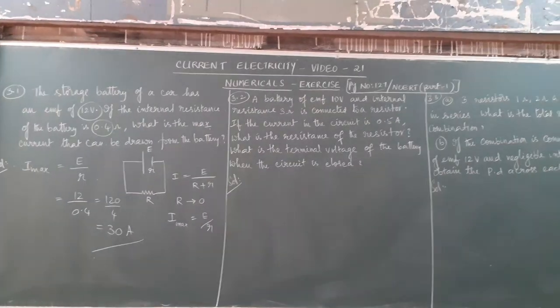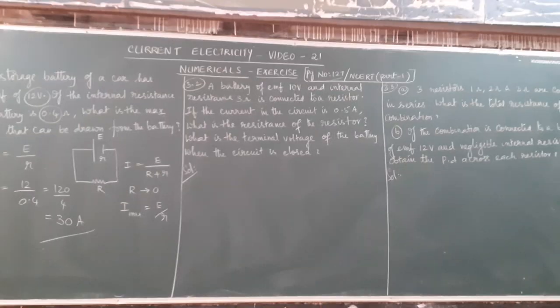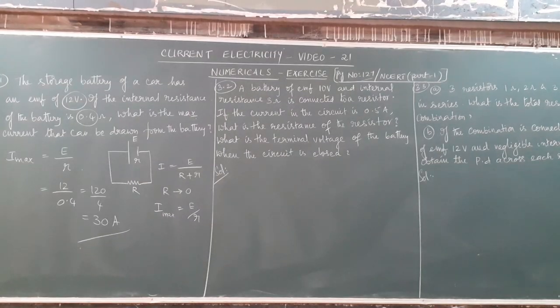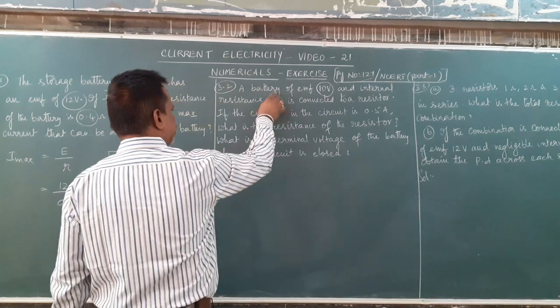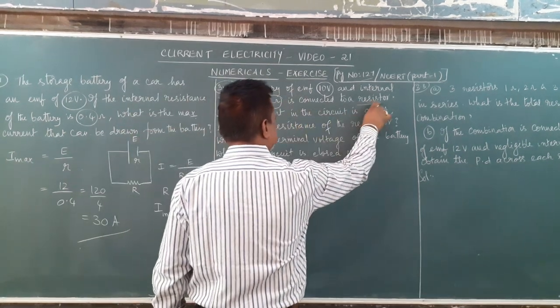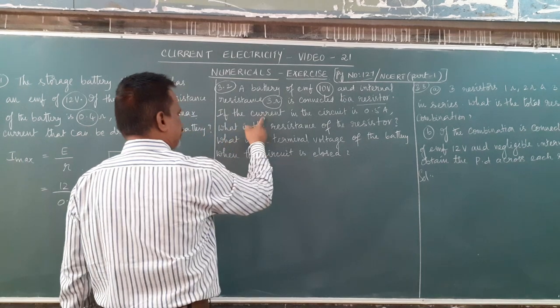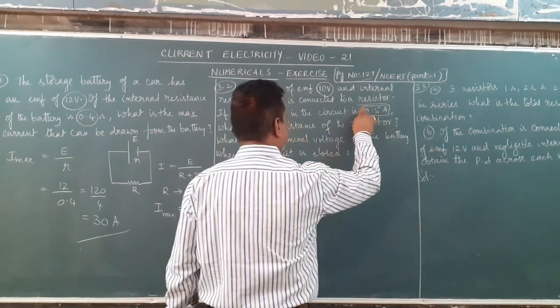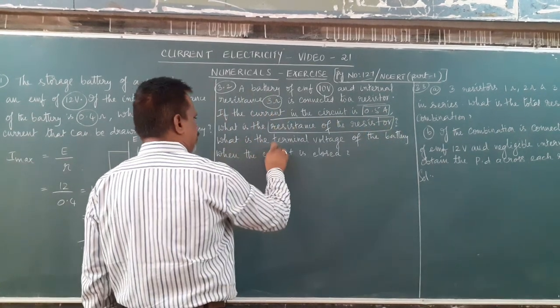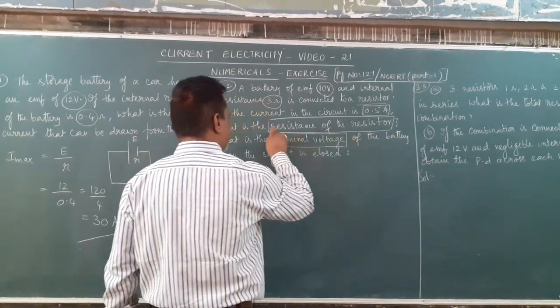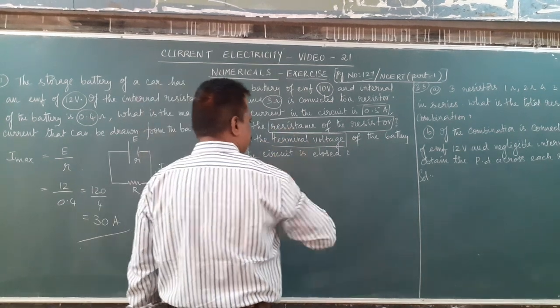Go to the second question. A battery of EMF 10 volt and internal resistance 3 ohm is connected to a resistor. If the current in the circuit is 0.5 ampere, what is the resistance of the resistor and the terminal voltage of the battery when the circuit is closed?